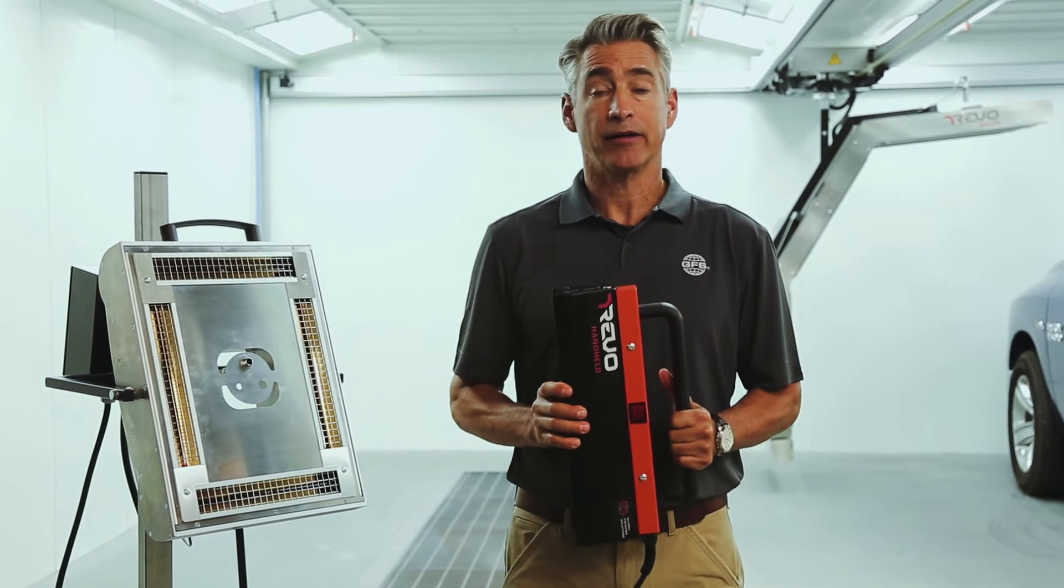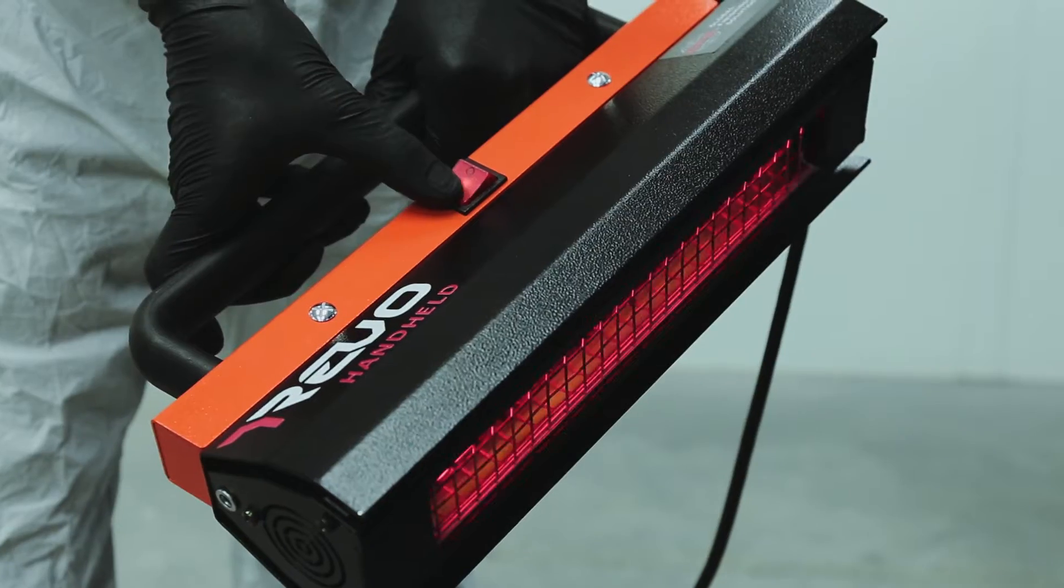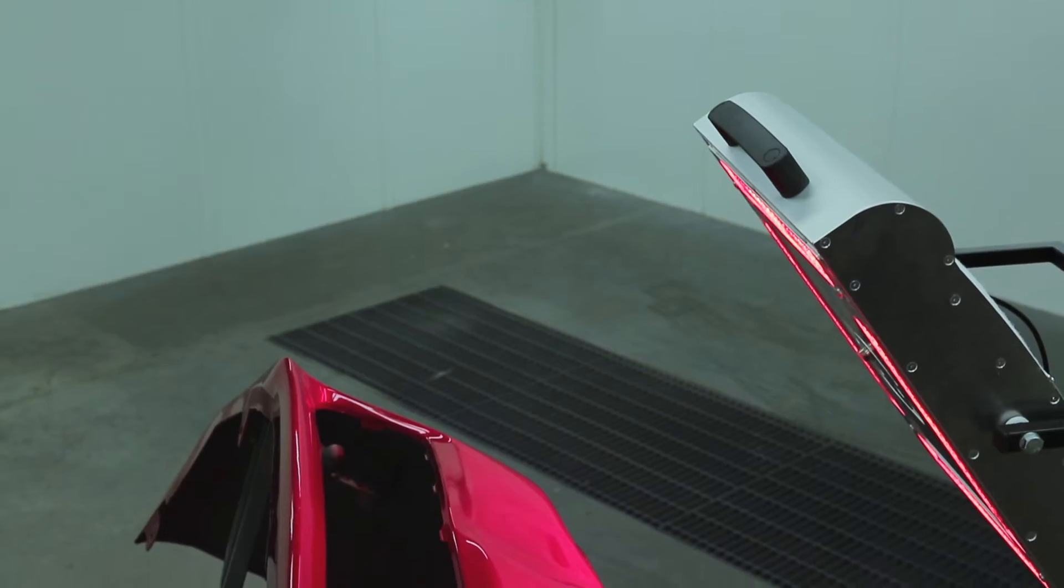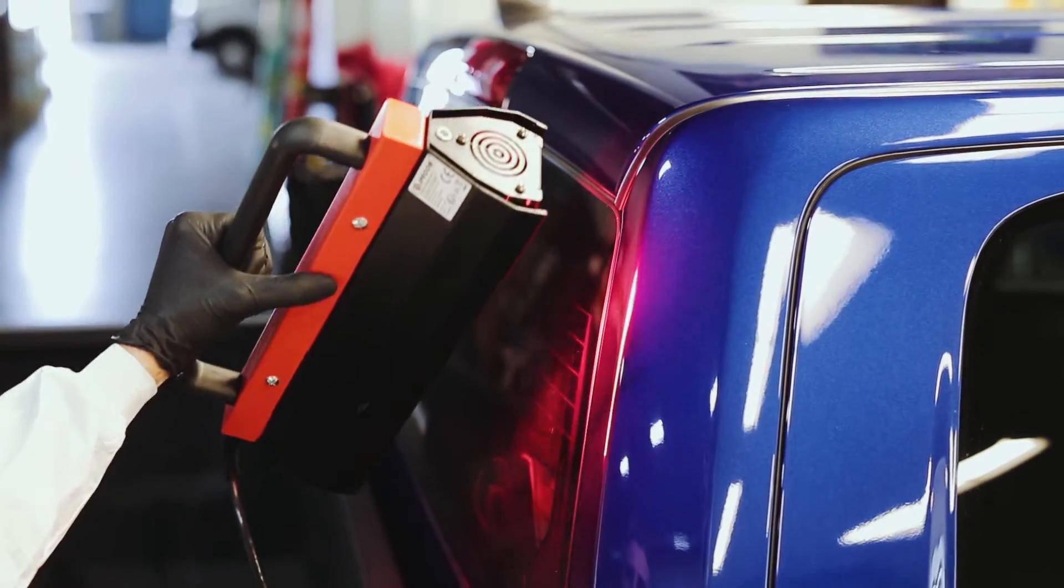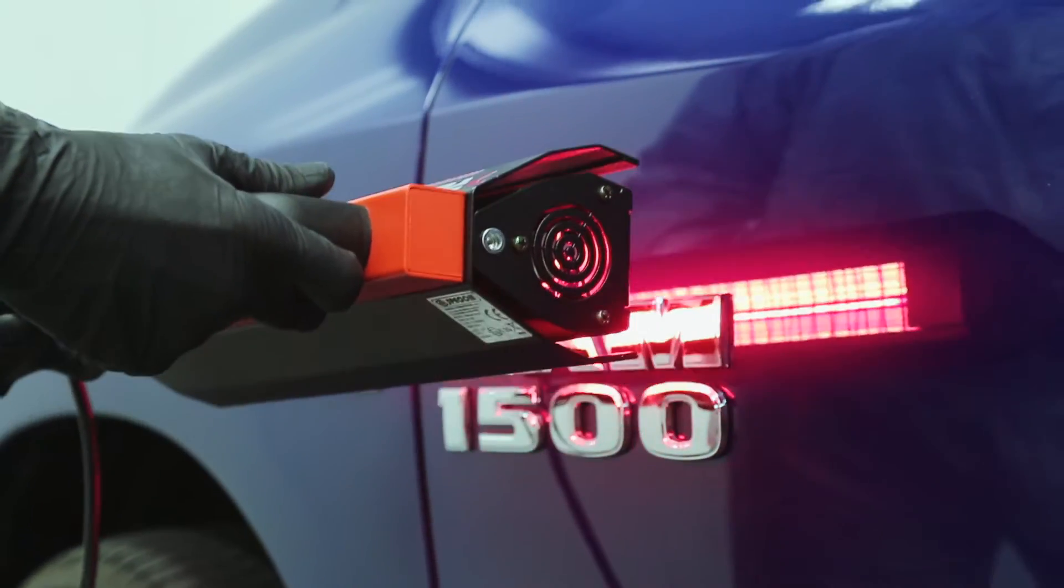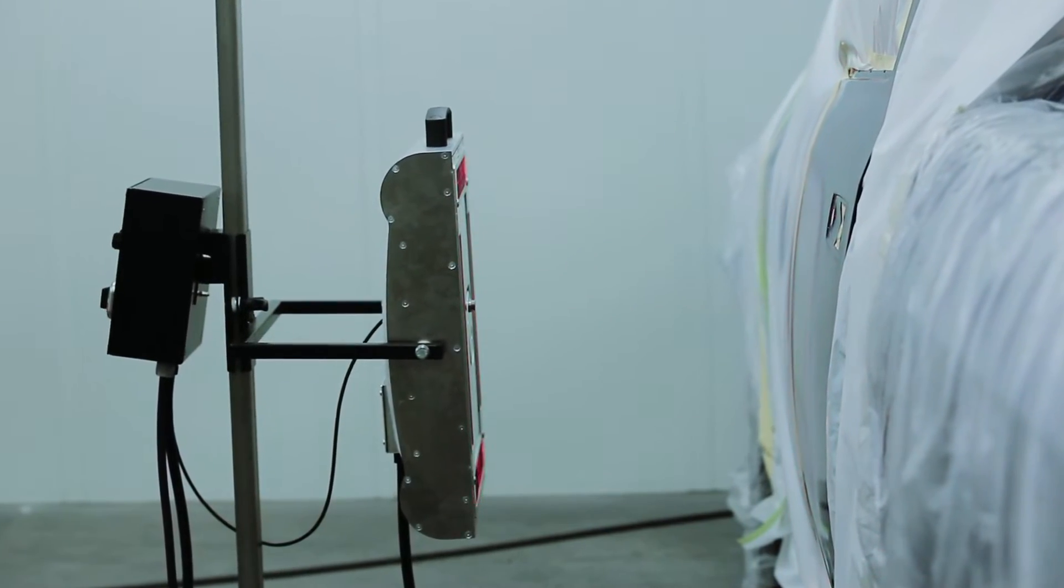It's time to put the Revo Handheld and the Revo Spot to work. These two powerful units were designed to cure filler and coatings, perform spot repairs, soften glass seals, and remove adhesives exceptionally fast with remarkable quality results.